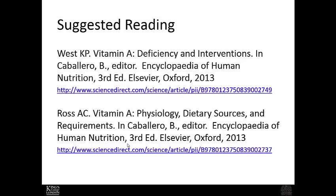In summary, we've looked at vitamin A metabolism, the amounts required in the diet to prevent deficiency, and what deficiency actually looks like. Two suggested readings from the Encyclopedia of Human Nutrition are available through the library's website — covering deficiency and interventions, as well as physiology, dietary sources, and requirements. For any questions on the lecture, please send an email directly or use the frequently asked questions option on the virtual campus.